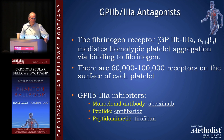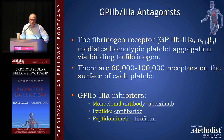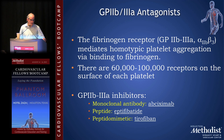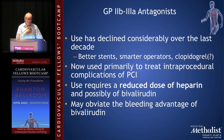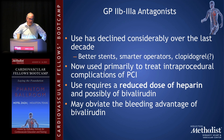GP2B3A antagonists — when I was younger, this was hot stuff, but there's a lot less interest today. The fibrinogen receptor GP2B3A, or integrin alpha 2B beta 3, mediates homotypic platelet-to-platelet aggregation via binding to fibrinogen. There are about 60 to 100,000 of these receptors per platelet. There are three antagonists: a monoclonal antibody — abciximab, which is ReoPro; a peptide — eptifibatide; and a peptidomimetic — tirofiban. Their use has declined considerably over the last decade, likely due to better stents, smarter operators, and more aggressive P2Y12 use. They're now used primarily to treat intra-procedural complications of PCI.